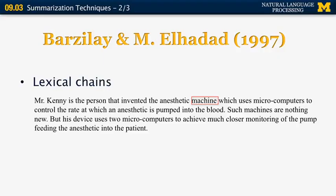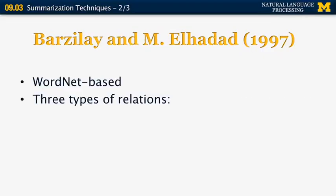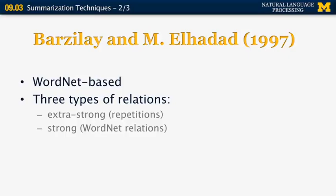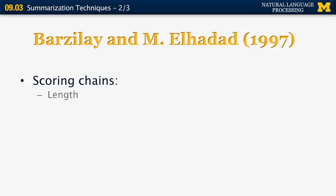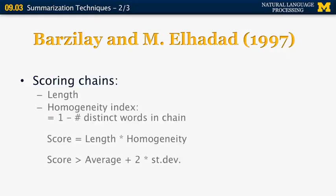So we have several lexical chains here. One consists of 'machine', 'machines', and 'device'. Another is 'pumped' and 'pump', and so on. The idea is to identify the longest lexical chains and then pick the sentences that contain as many of those chains as possible. The relations come from WordNet. Some are 'extra strong', corresponding to exact repetitions of the same word. Others are 'strong', such as synonyms and hypernyms. Others are 'medium strong' — links between sense sets when the link length is greater than one. For scoring, a simple formula based on chain length and a homogeneity index is used. The sentences with the highest scores are produced as output.